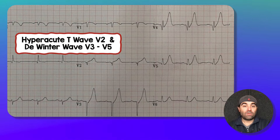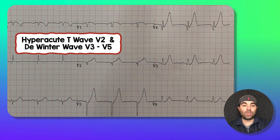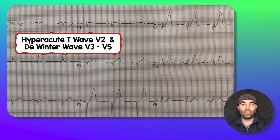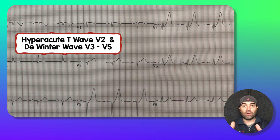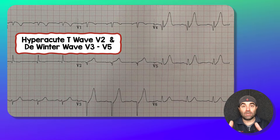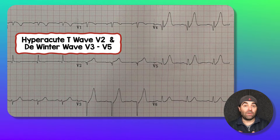Lead V2 — that's a hyperacute T-wave. Your T-wave should never be able to fit over your QRS, and that to me is a simple definition of a hyperacute T-wave. If you can take your T-wave and put it over your QRS and it all fits underneath, that's a hyperacute T-wave in the right clinical setting.